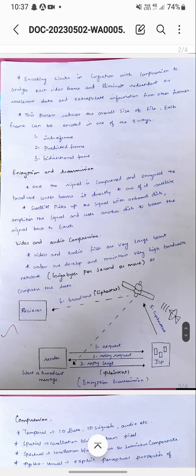The sender can request to the ISP, and the ISP converts it to cipher text. The cipher text is then broadcast and the receiver finally receives the message. ISP stands for Internet Service Provider.